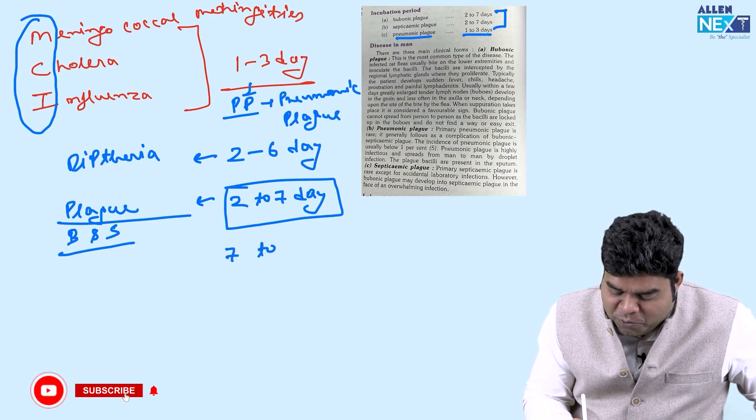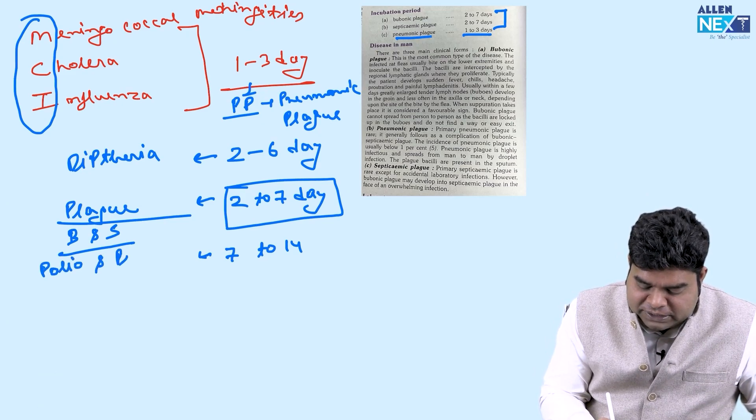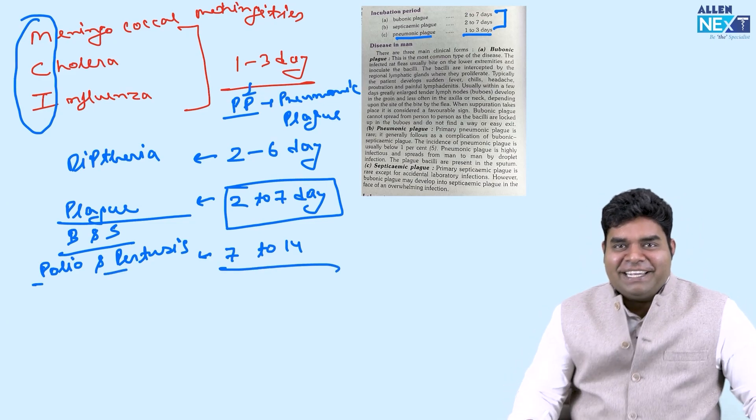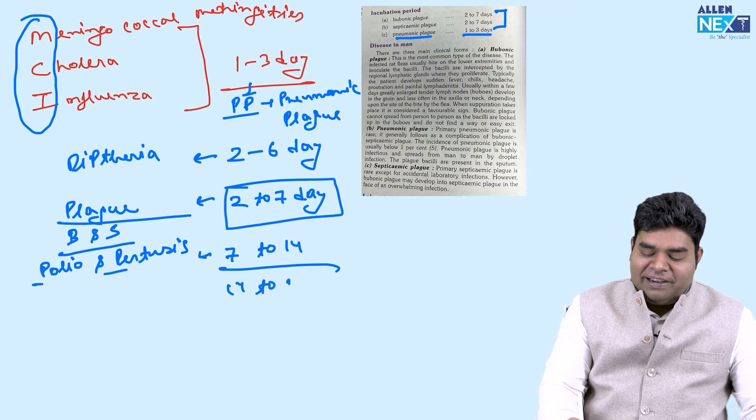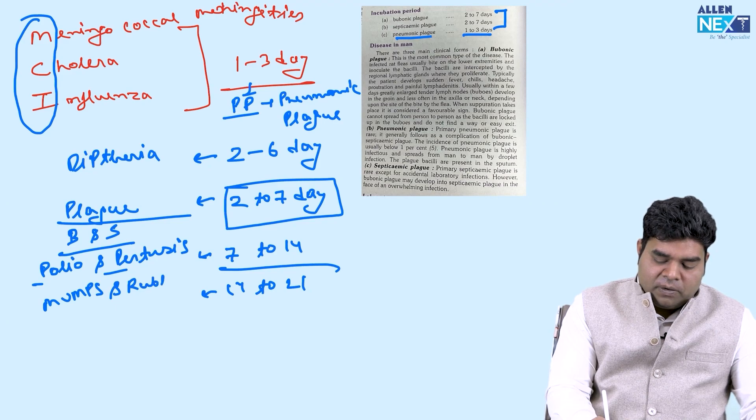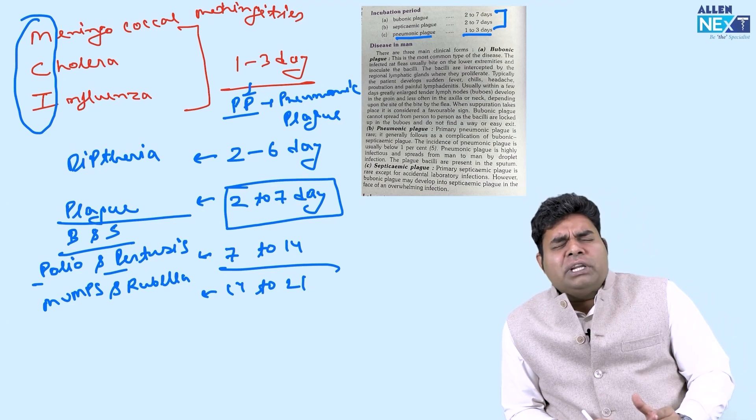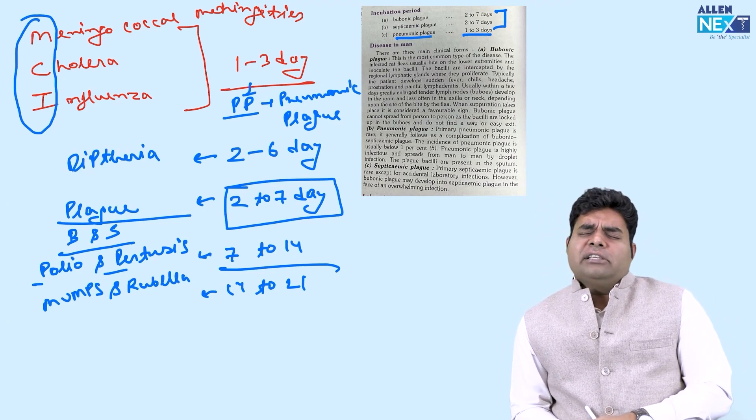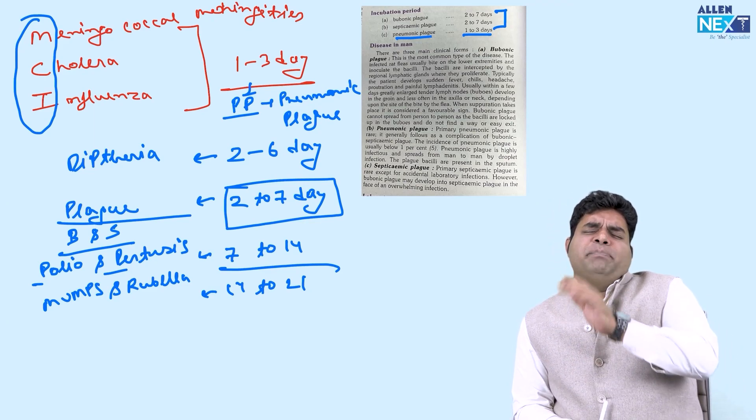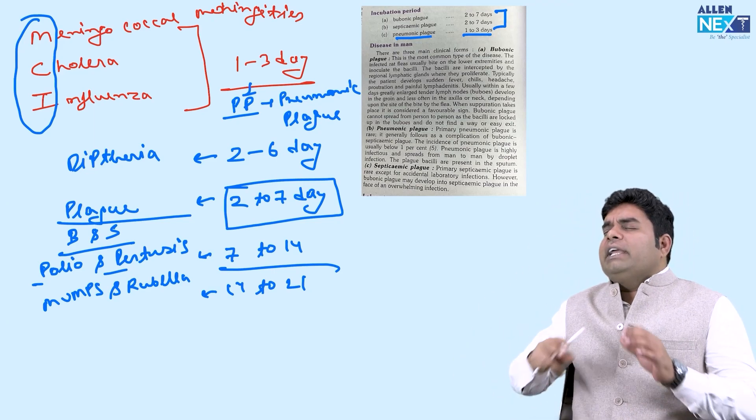7 to 14, this is for polio and pertussis. P for polio, P for pertussis, 7 to 14. And 14 to 21 is for mumps and rubella. It is not so difficult to remember, it is very simple. 1 to 3 is MCI, meningococcal meningitis, cholera, influenza, then double of 1 to 3, 2 to 6 is diphtheria, 2 to 7 is plague, 7 to 14 is polio pertussis, and 14 to 21 is mumps and rubella.